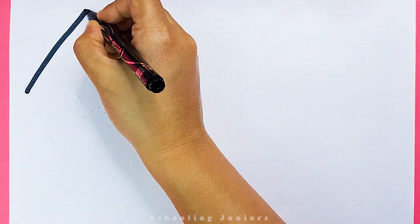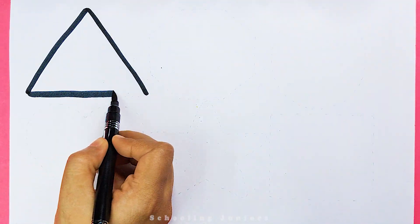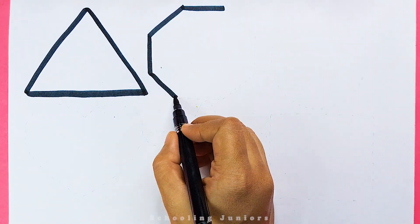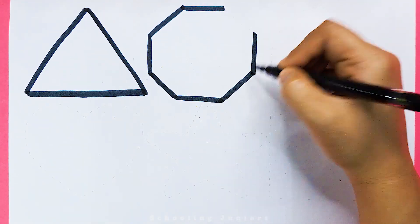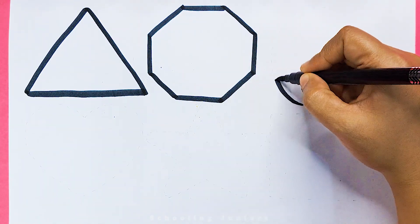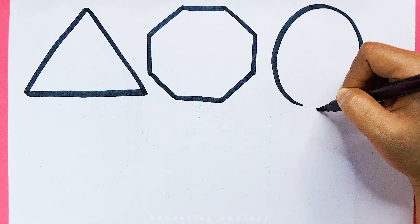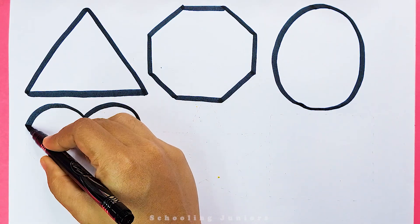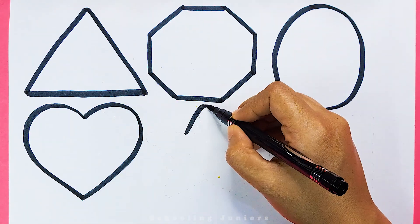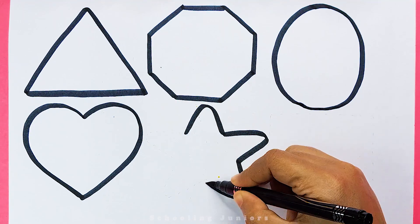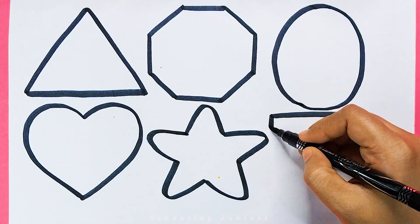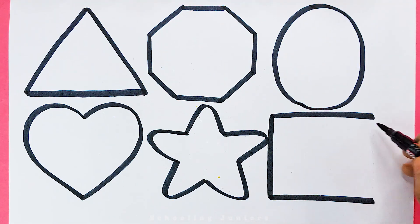Now, let's learn some 2D shapes. Triangle. Octagon. Oval. Star. Square.